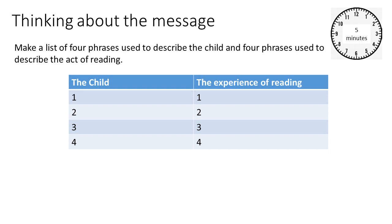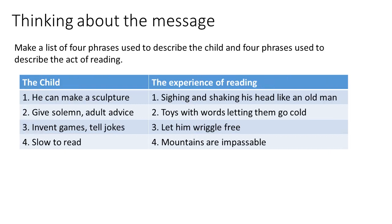Next, think about the message. Make a list of four phrases used to describe the child and four phrases used to describe the act of reading. Pause the video for five minutes to do this now. In terms of the child: he can make a sculpture, he gives solemn adult advice, he invents games and tells jokes, but he is slow to read. In terms of the experience of reading: sighing and shaking his head like an old man, toys with words, letting them go cold, letting them go free, and mountains are impassable.